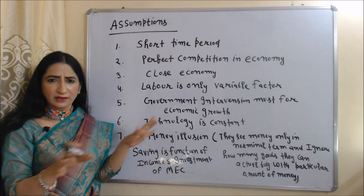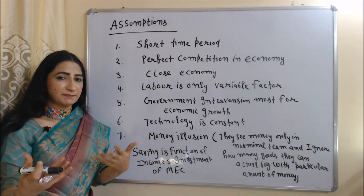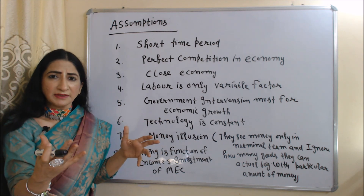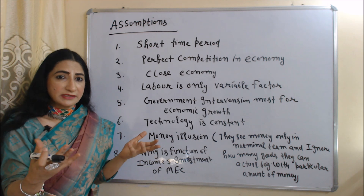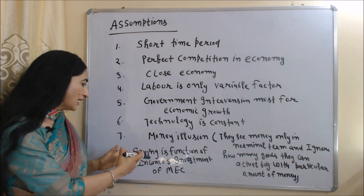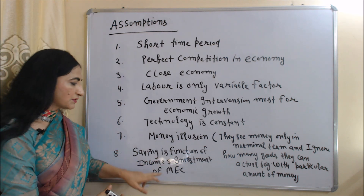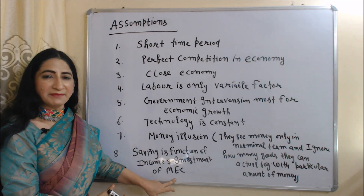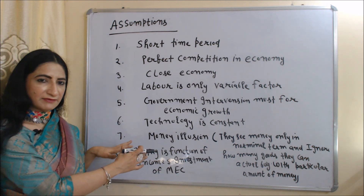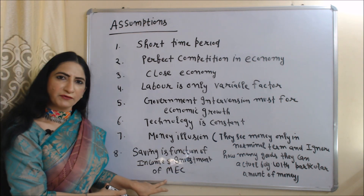This theory assumes technology is constant. Money illusion: according to this theory, people have money illusion — they see money only in nominal terms and ignore how many goods and services they can actually buy with a particular amount of money. Lastly, saving is dependent on income and investment is a function of MEC — marginal efficiency of capital. Saving depends on income and investment depends on marginal efficiency of capital.